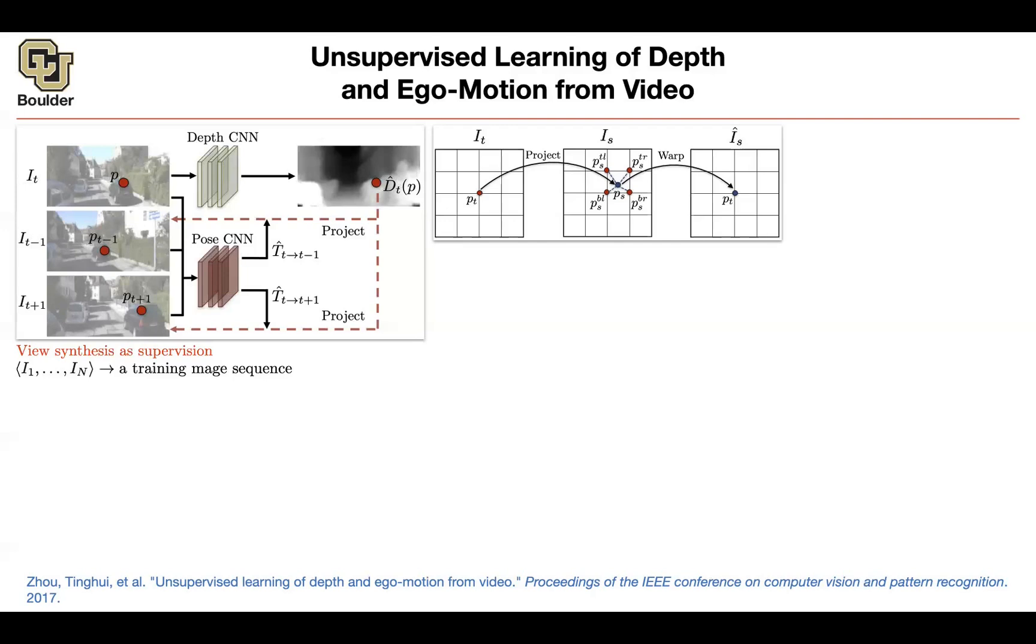You are going to have a sequence of training images or a training image sequence. And that sequence could have as low as three frames in it. The current frame, the frame from the previous time step, and the frame from the next time step. So N could be three.